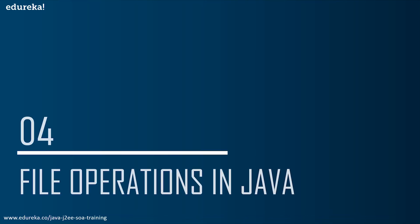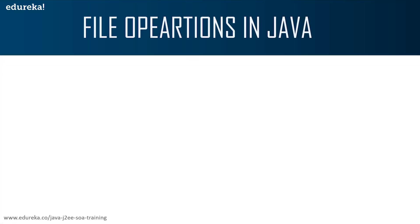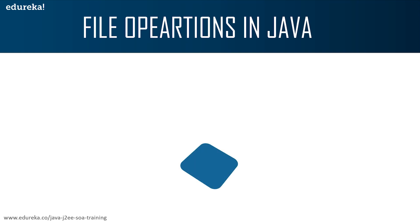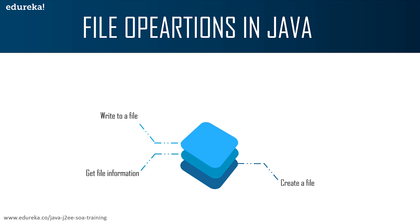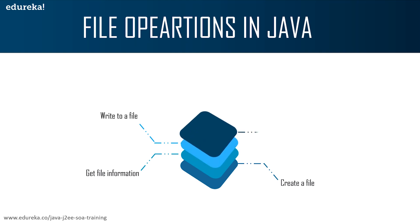Now let's see the various file operations present in Java. First you need to create a file, then once you create a file you need to get the information out of the file, after that you write information to the file, and then you read the data from the file.